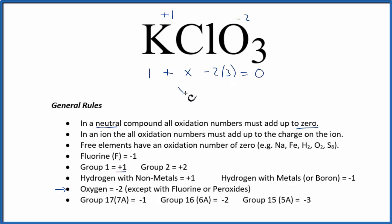So X minus 6 plus 1, so minus 5 equals 0, X equals plus 5, and that is the oxidation number on the chlorine in KClO3.